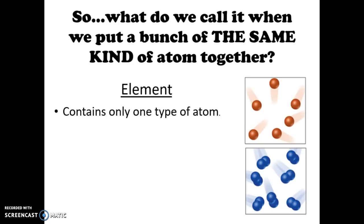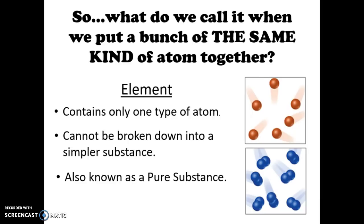And if we were to define what an element is, an element contains only one type of atom. So you can see right here we just have one type of atom, and even with the two bonded together that's still just one type of atom. Elements cannot be broken down into simpler substances. They're as simple as they get, that atom is that atom. And lastly we would call elements pure substances.